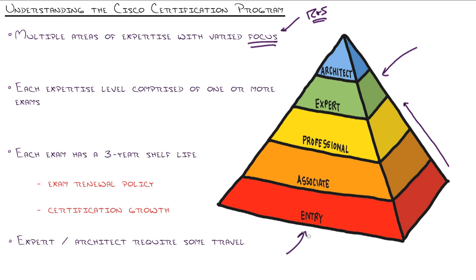Then start down here at the entry level, which for the routing and switching path happens to be ICND1. That's the first exam you'll take. And when you pass that, you get the CCENT, the Cisco Certified Entry Level Network Technician certification. Go on and pass ICND2, and now you have the Cisco Certified Network Associate.